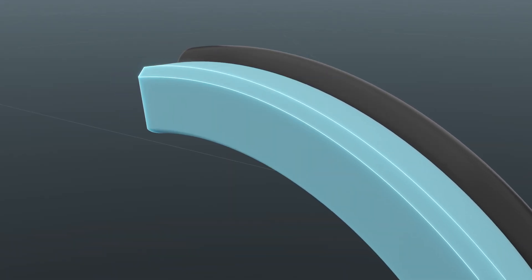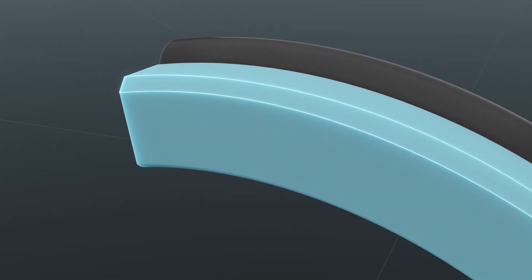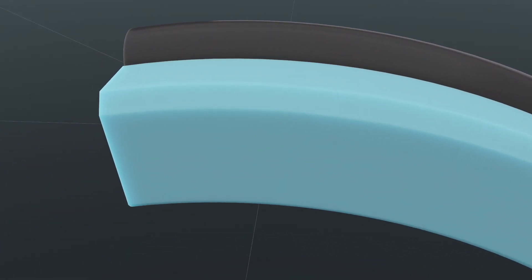Chamfered corners on the outer diameter of the ring allow a larger corner radius, facilitating production processes to ensure quality and consistency.